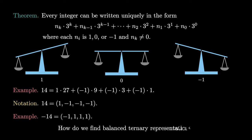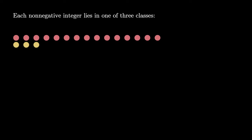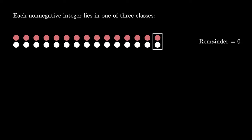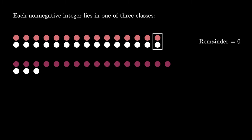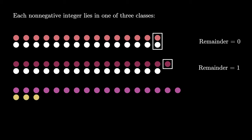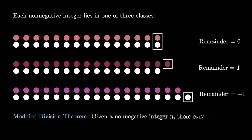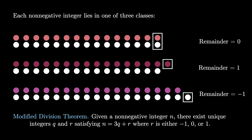Now that we know what balanced ternary representations are, let's see an algorithmic way to build them. Each non-negative integer lies in exactly one of three classes when considering divisibility by 3. It may be perfectly divisible — remainder 0. It may leave exactly 1 object over — remainder 1. Or if two pieces are left over, we can consider that one extra copy of 3, giving a remainder of negative 1. This leads to a modified division theorem: any non-negative integer n can be written uniquely as n equals 3q plus r, where r is minus 1, 0, or 1, and q is an integer.